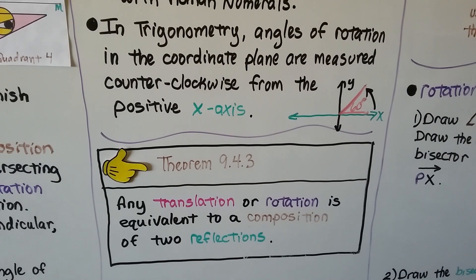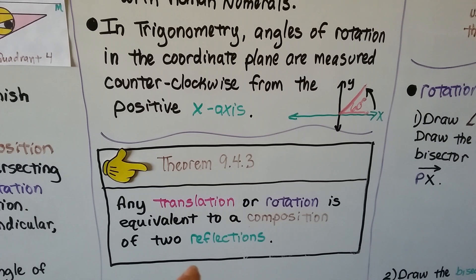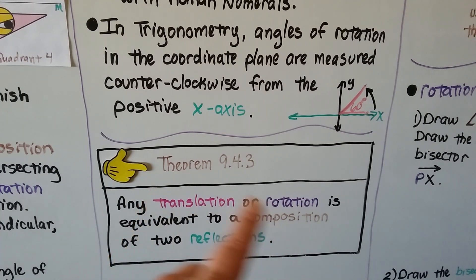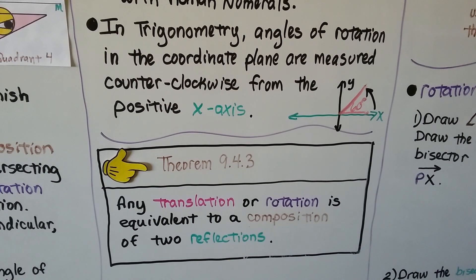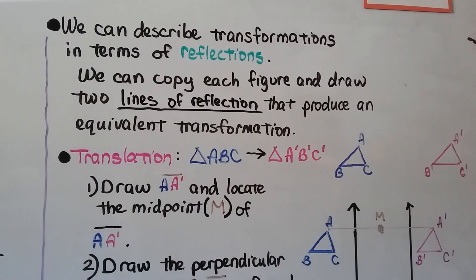Theorem 9.4.3 says any translation or rotation is equivalent to a composition of two reflections. That's kind of the flip of what we saw in the other theorem — it said two reflections can be a translation or rotation, and now it's saying translations and rotations can be expressed as two reflections. We can describe transformations in terms of reflections.